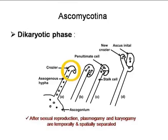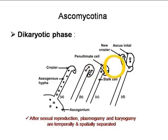Dikaryophase is a characteristic feature of Ascomycotina. Motile cells are absent in this group completely. After sexual reproduction, it has been observed that plasmogamy and karyogamy are temporally and spatially separated. Because of this characteristic temporal and spatial separation, the dikaryophase plays an important role in the life history of Ascomycotina.